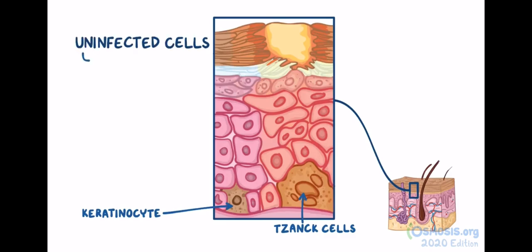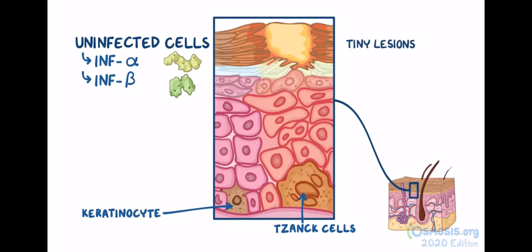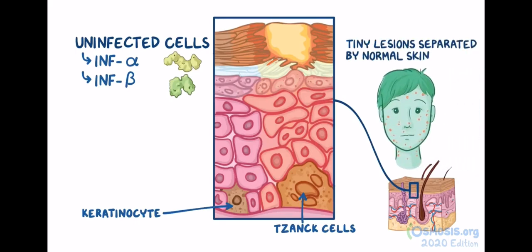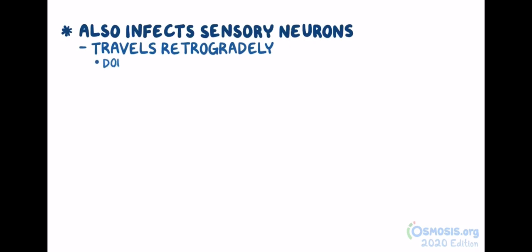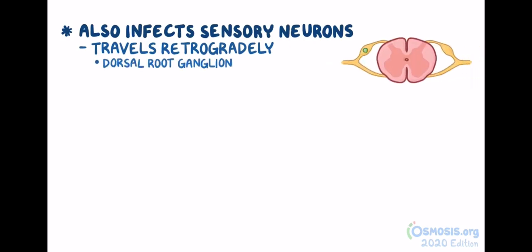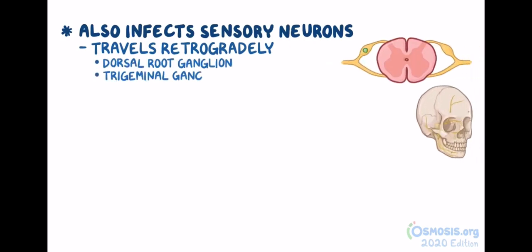Uninfected cells start secreting interferons alpha and beta, which inhibits viral protein synthesis and protects those cells from getting infected. As a result, we get tiny lesions on the skin separated by normal areas of skin. In addition to infecting keratinocytes, the virus also infects sensory neurons in the skin, and in those neurons it travels retrogradely — meaning backward — through the neuron to the dorsal root ganglia, or, if it's on the face, the trigeminal ganglia.